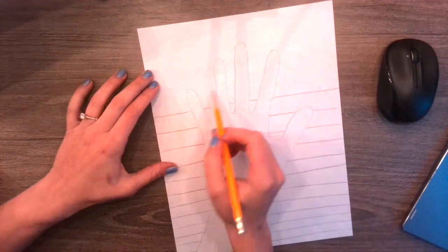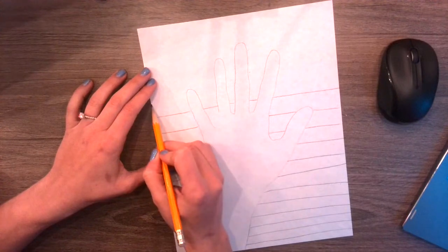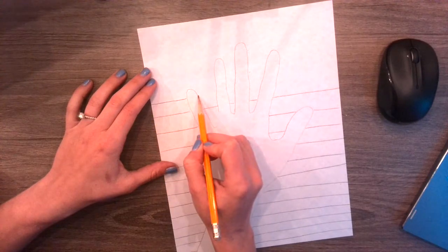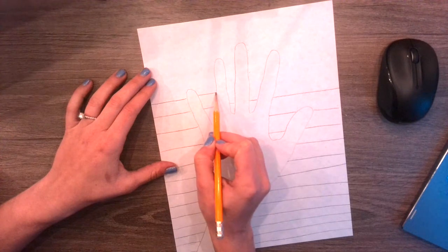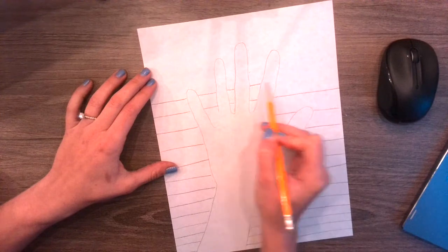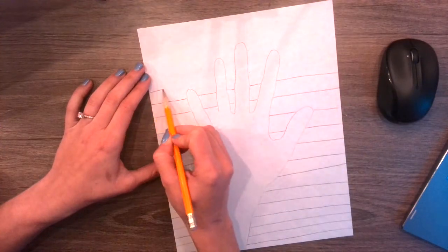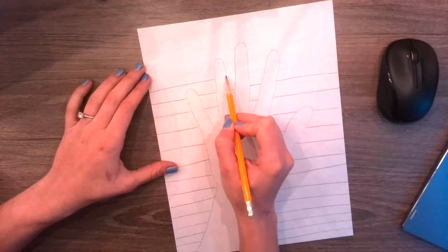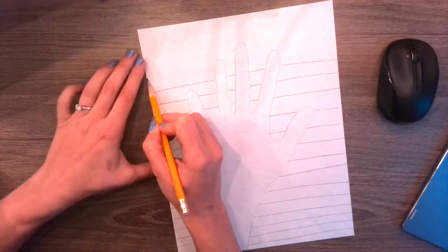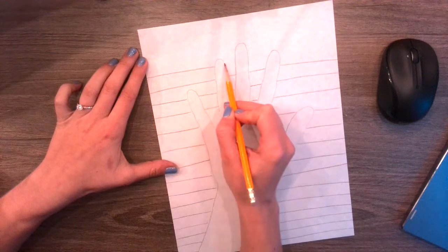It gets a little bit harder up here at these fingers because you're going to have to stop when you get to the finger, skip the finger part, keep going. So you're going to have to make sure your fingers are overlapping the lines that you're drawing. So just make sure that you don't go straight across those fingers.